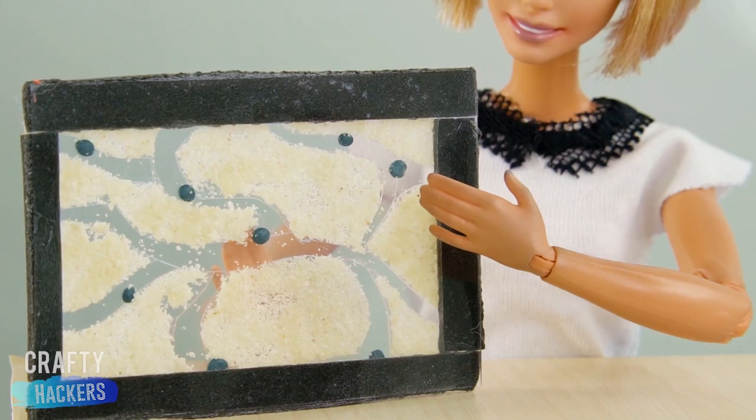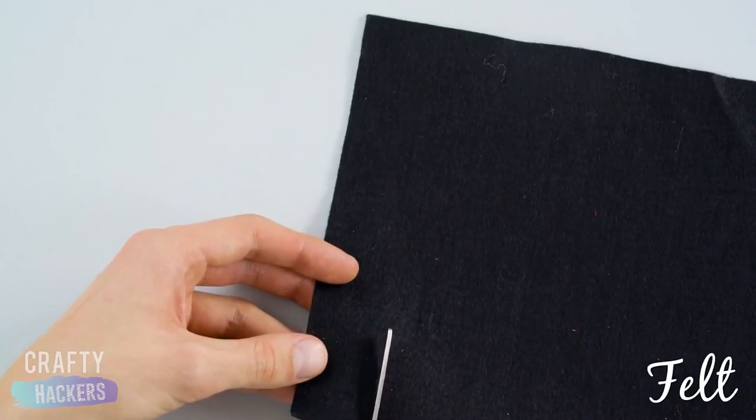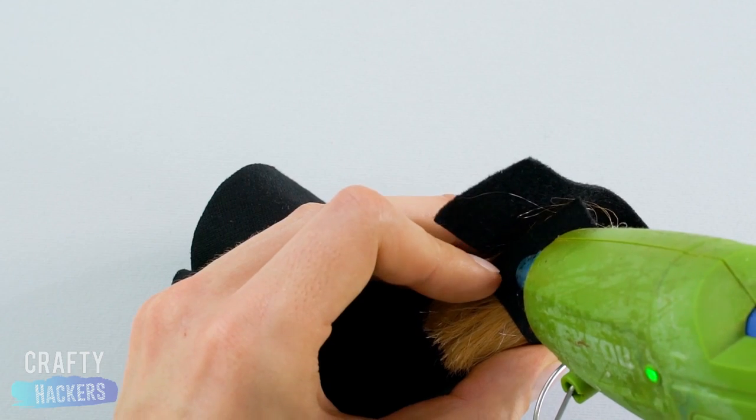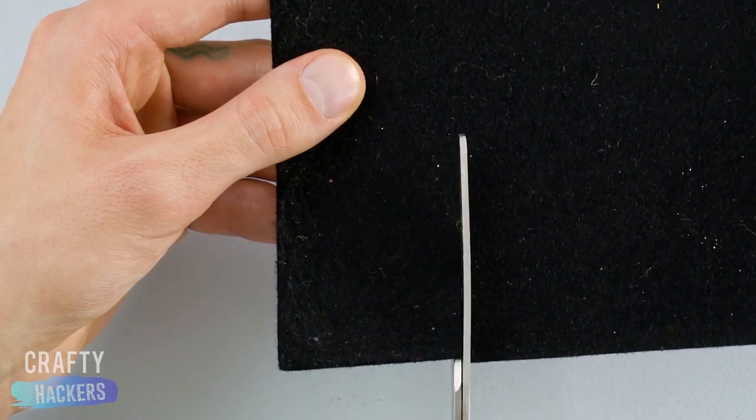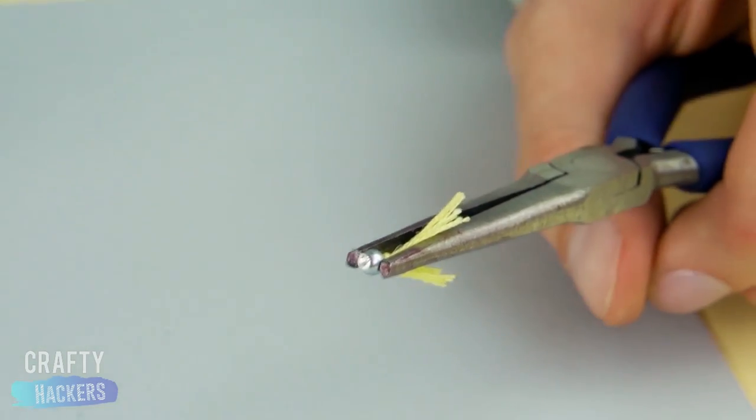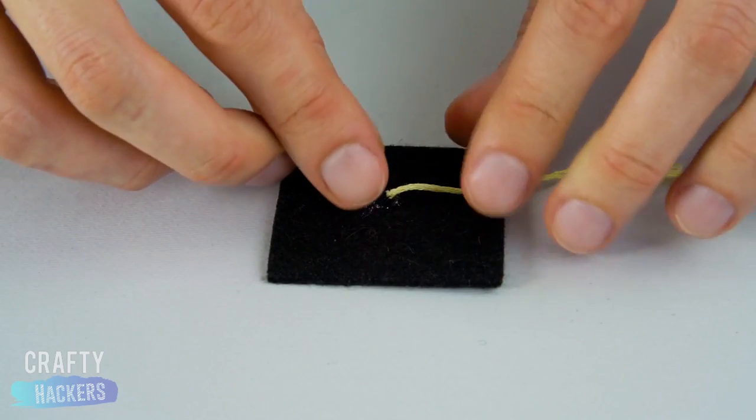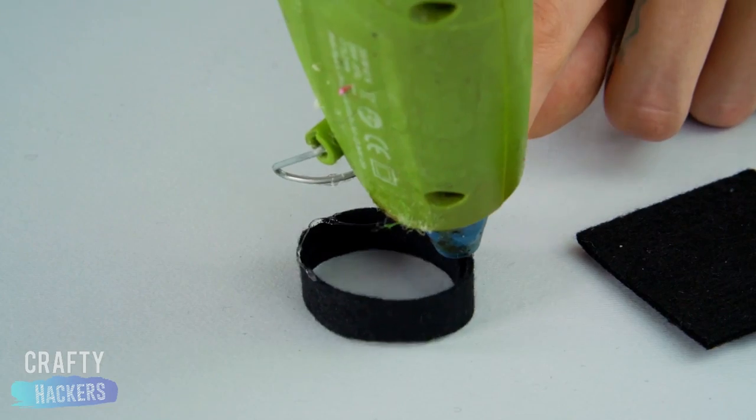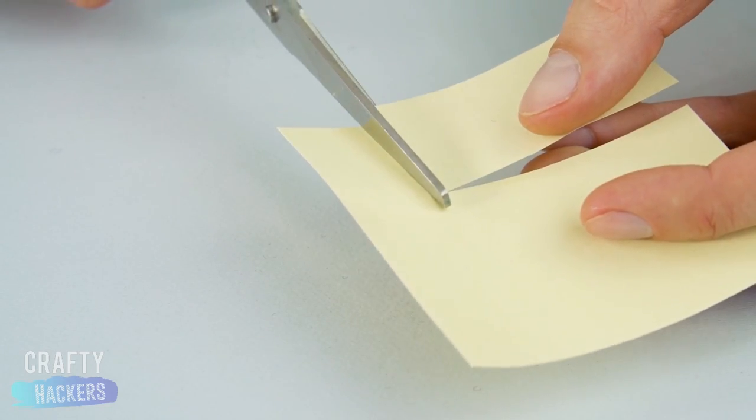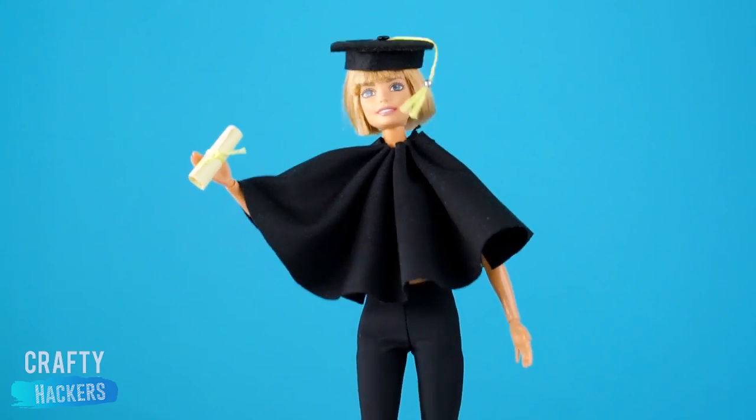After passing all her classes, Barbie is finally ready to graduate. Let's make her a cap and diploma. First, cut out a strip of black felt and measure it to Barbie's head. Glue it to fit. Then, cut out a black square. Cut a yellow string and add a little bead. Fray the ends to make a tassel and glue it to the center of your square. Press a piece of black clay over the glue spot. Now, glue the square to the cap. For the diploma, cut out a small piece of paper. Roll it up and tie a string around it. Congrats, graduates!